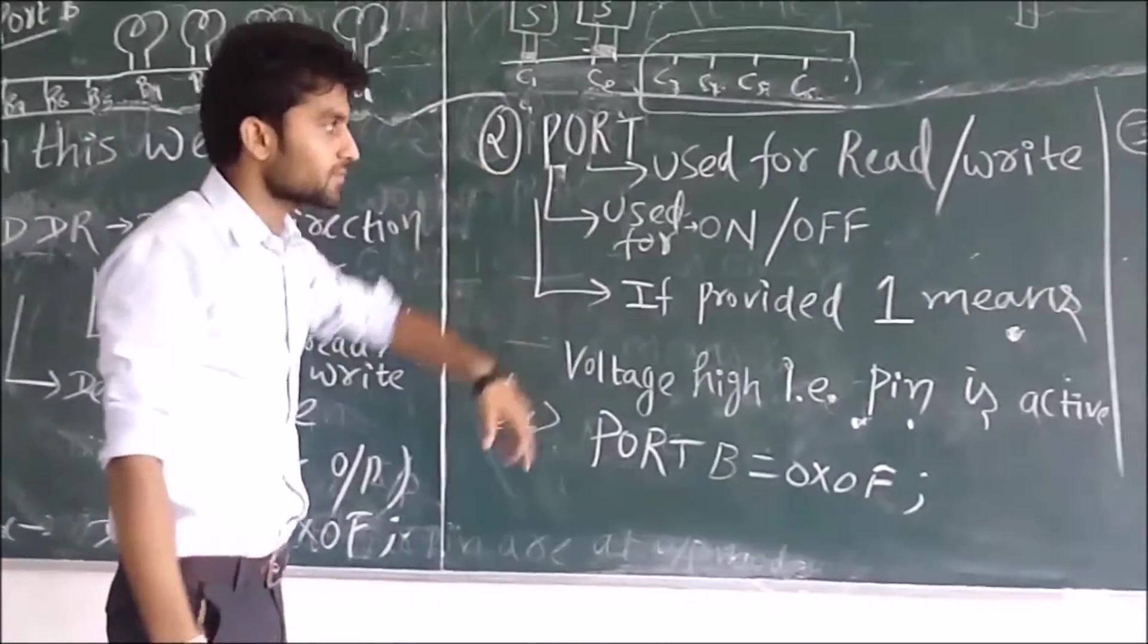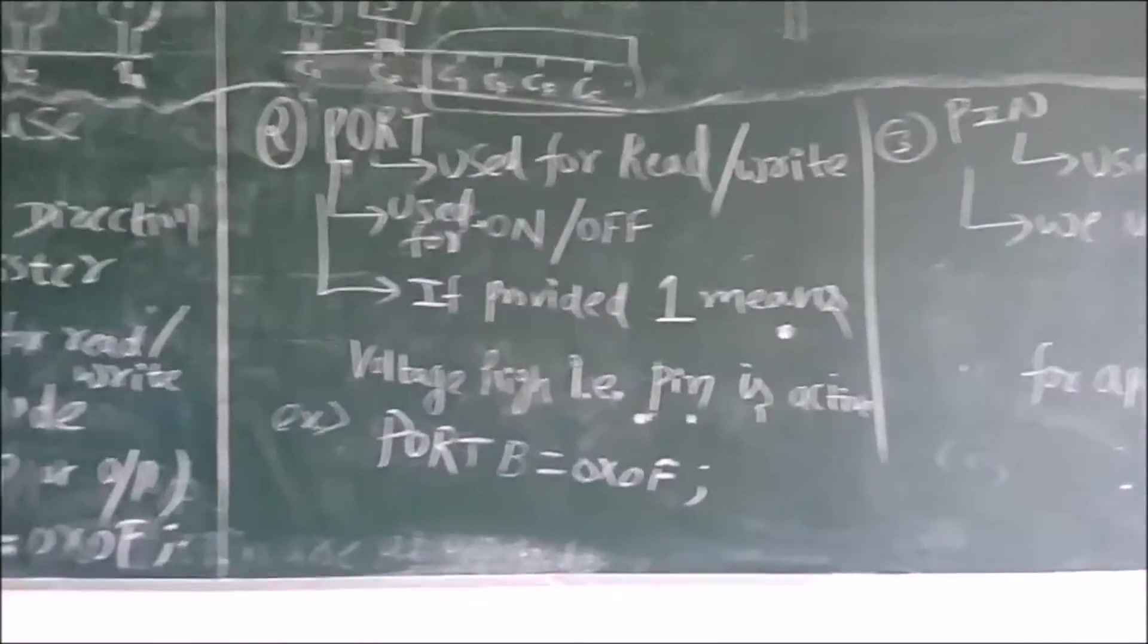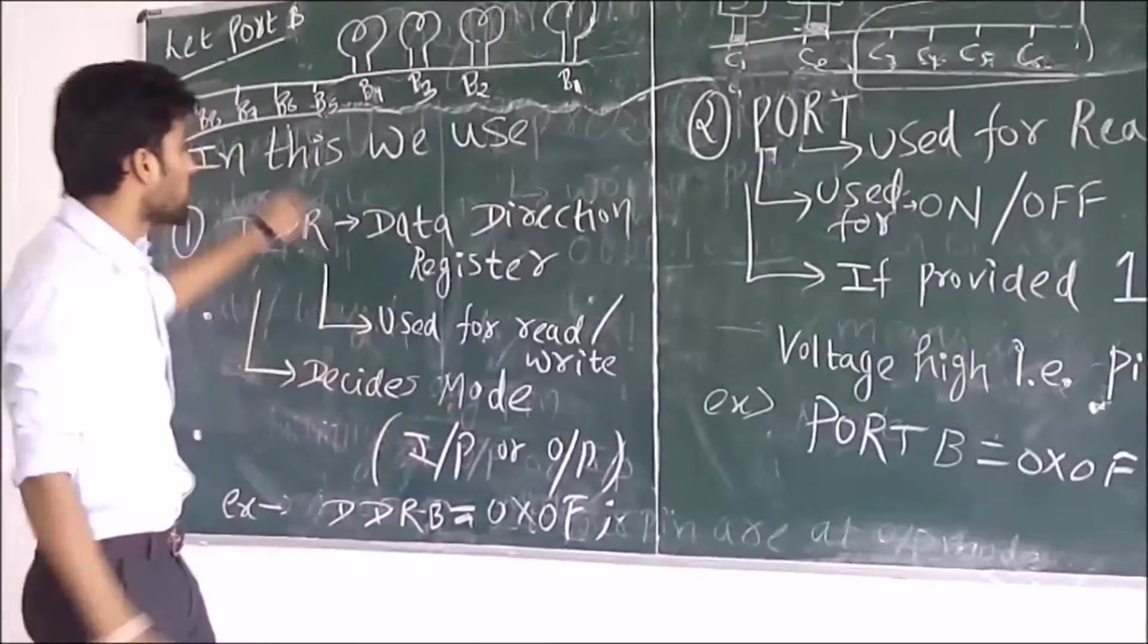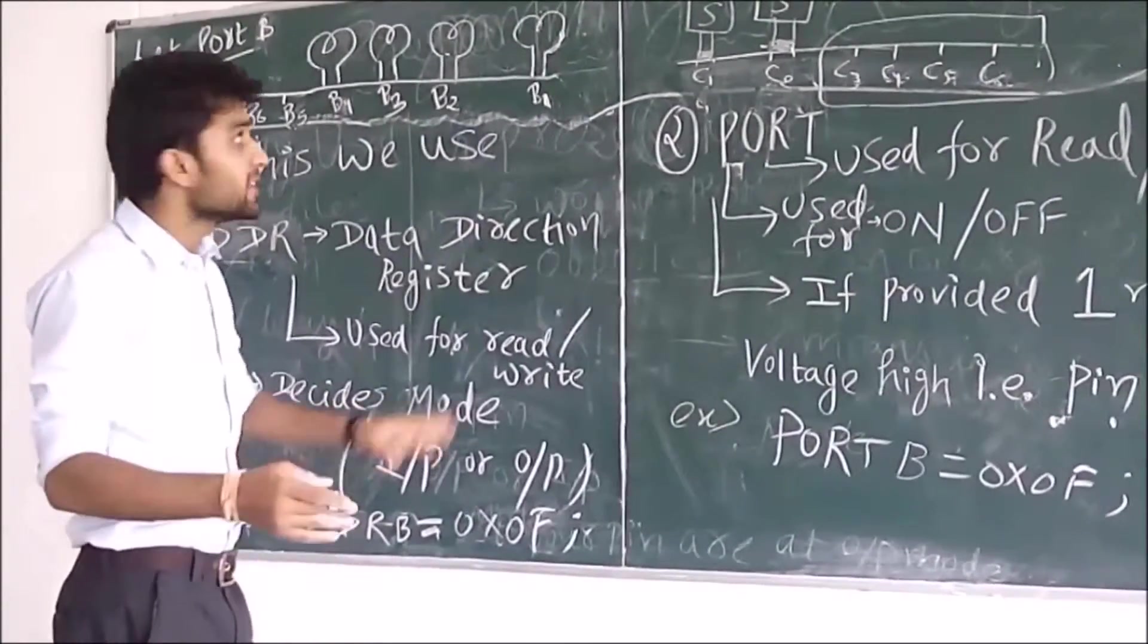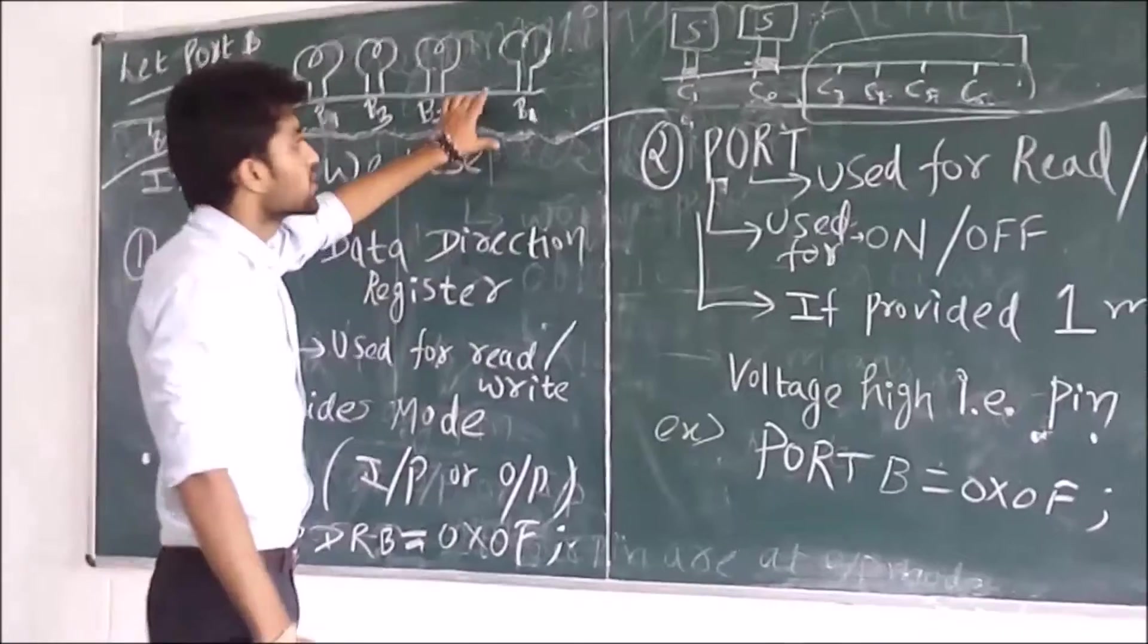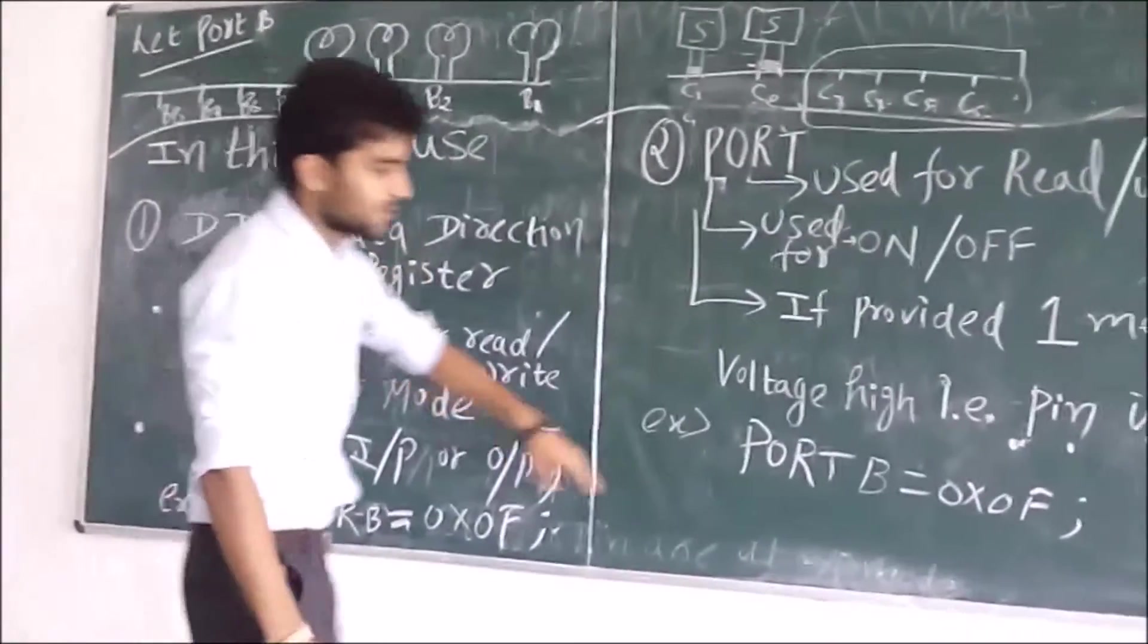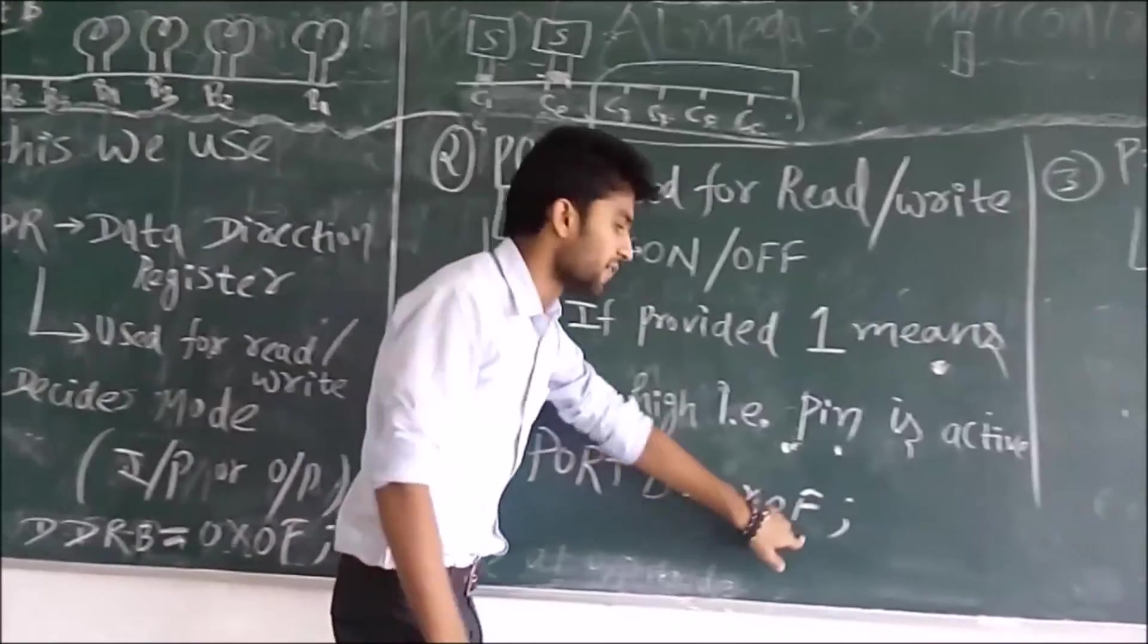Now, come to PORT. I told you that it can read and write also. It is used for on and off. These are 4 LEDs. You have made it in output mode by using DDRB. But initially, do they glow or not? You want them on or off. If you want that as you turn on the microcontroller, it should glow, then provide 1111.